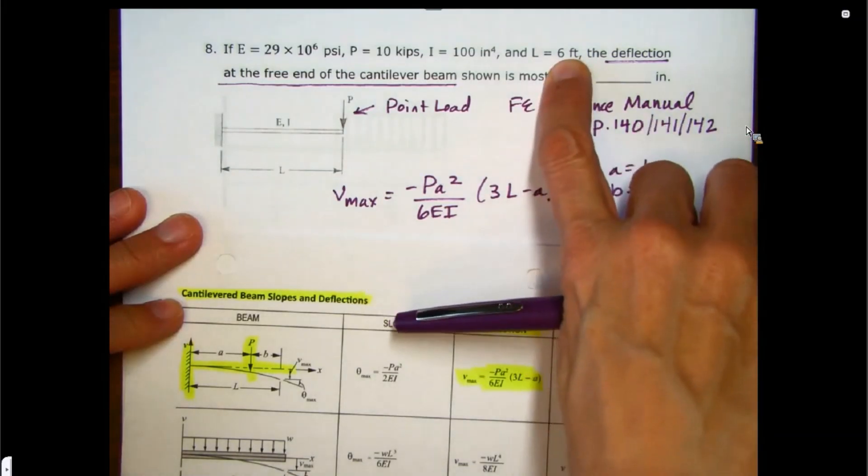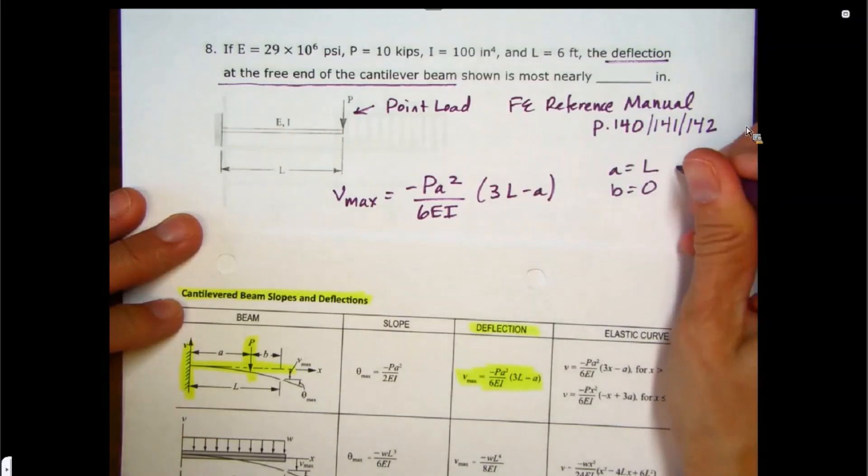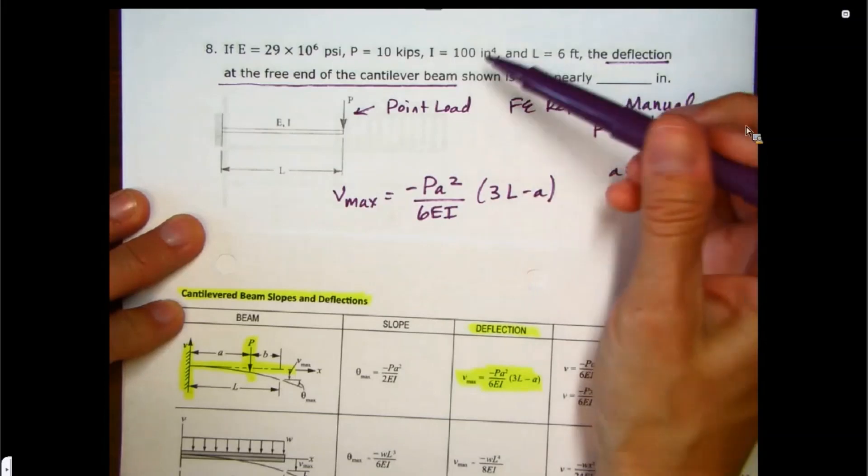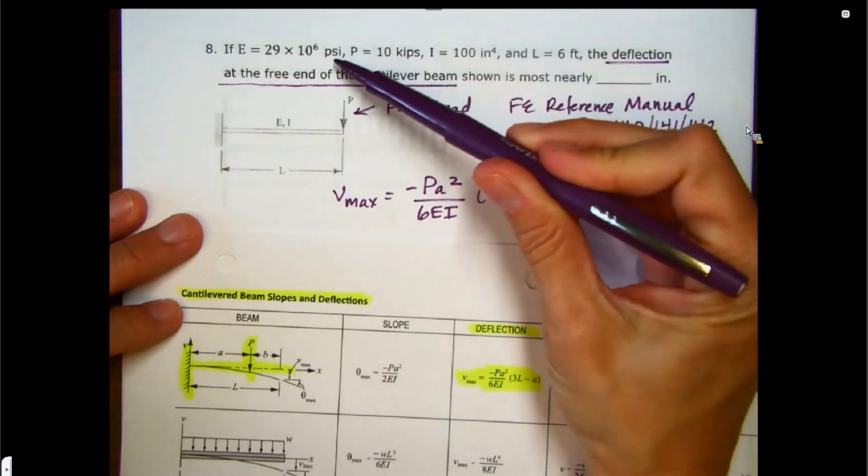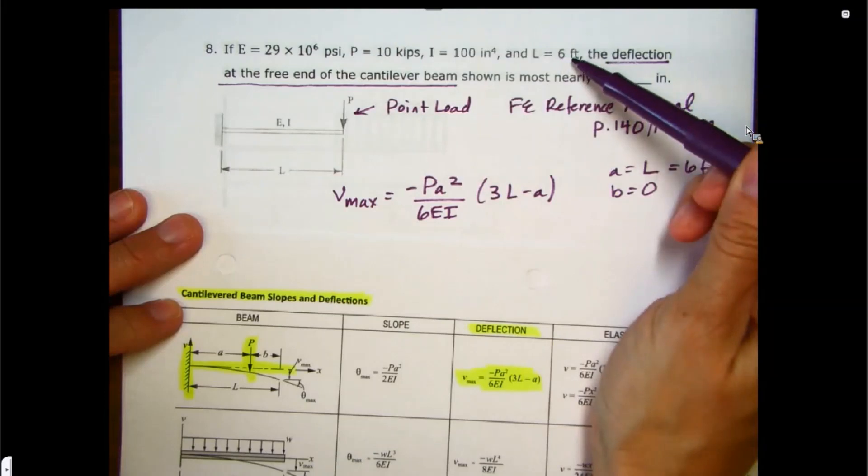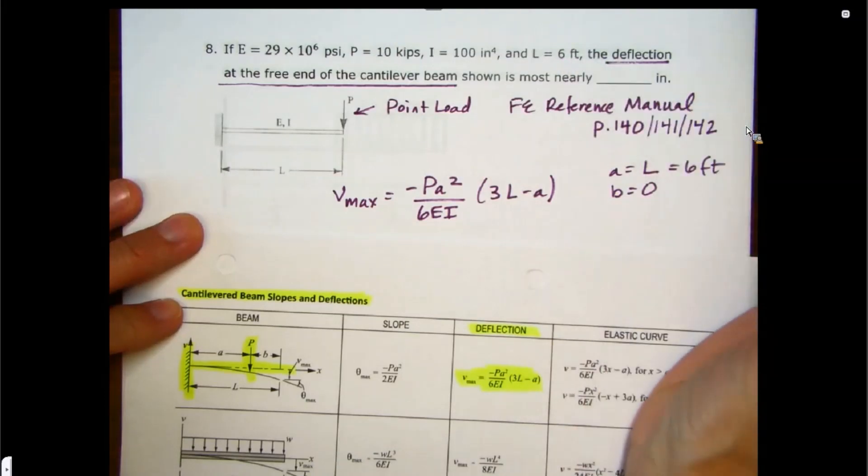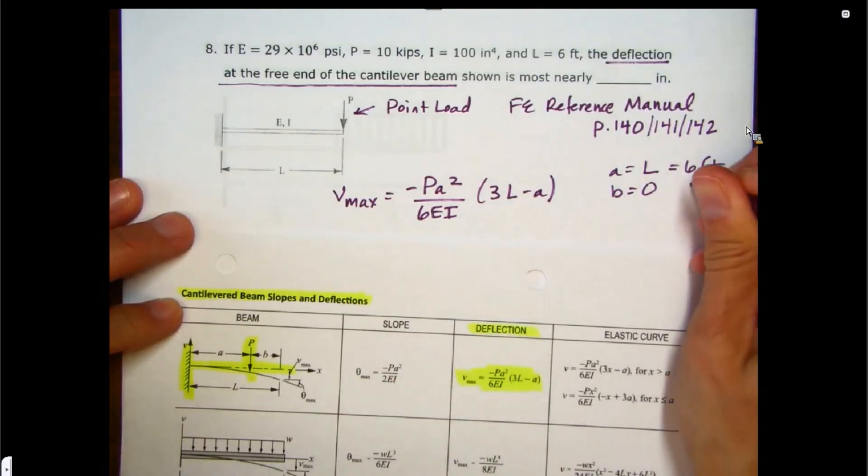We are told here that L is equal to six feet. But when we're going to plug this in, when we use this formula, we can see inches here. So let's go ahead and change that feet to inches right away. I'm just going to make that 72 inches right off the bat there.